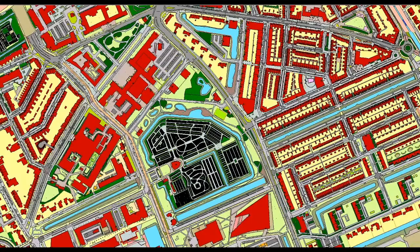A good example are the water boards who are very interested in 3D, specifically height differences, so they can analyze the water flow through the surroundings. For them, we're already registering the BGT in 3D.